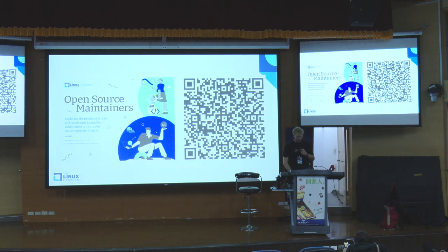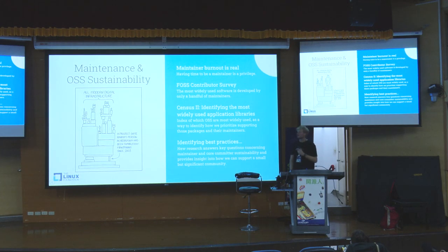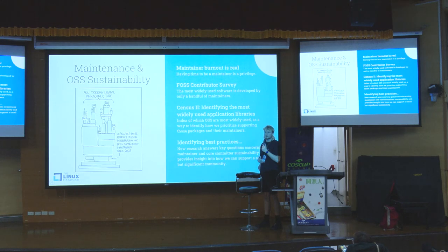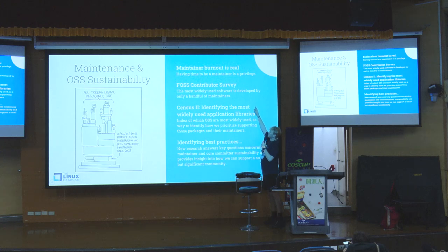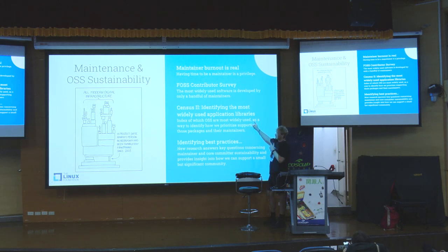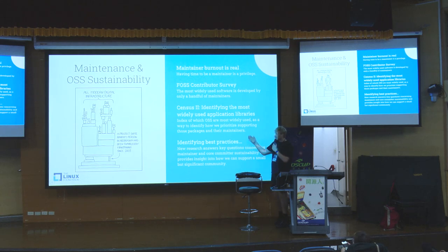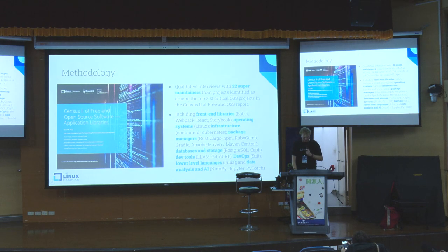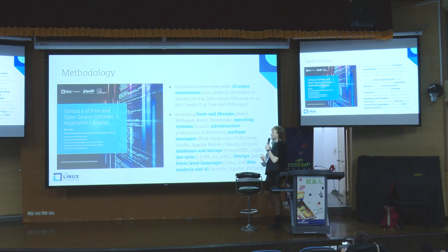Maintainers are so important, and a big problem we face is maintainer burnout because a few maintainers are doing a lot of the work. We previously did a report on the free and open source software contributor survey from 2018, and then a census — an analysis done with researchers at Harvard University — where we looked at dependency networks and key open source software dependencies. Based on this, we wanted to identify best practices, so we did 32 interviews with super maintainers: the principal maintainers in some of the most important open source software projects, including Linux, Kubernetes, NumPy, PyTorch, and PostgreSQL.